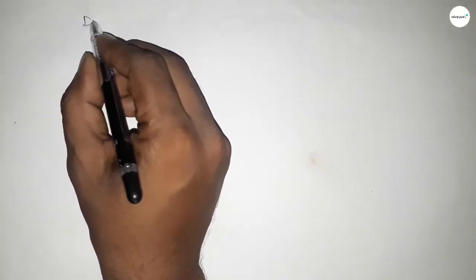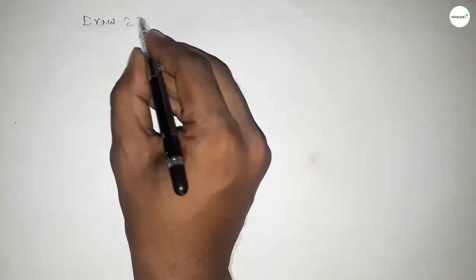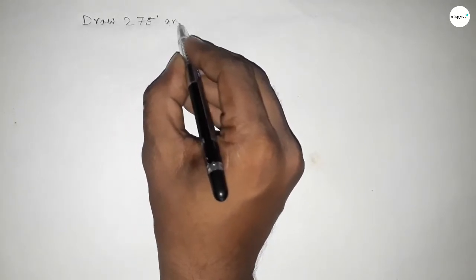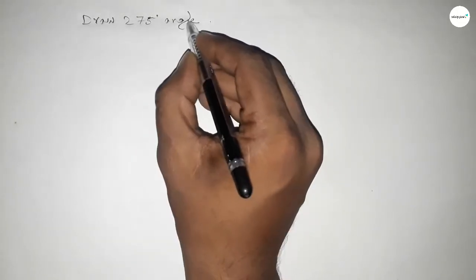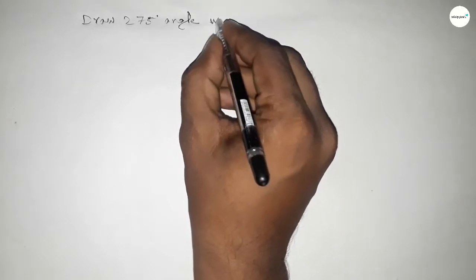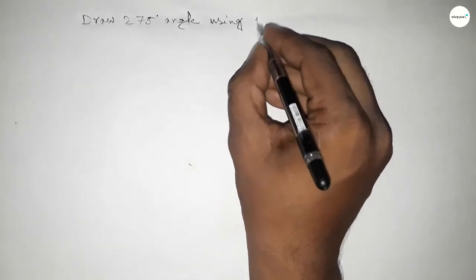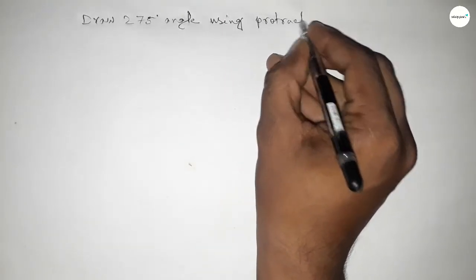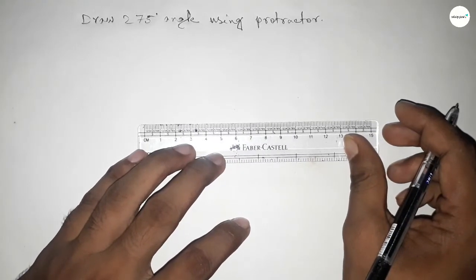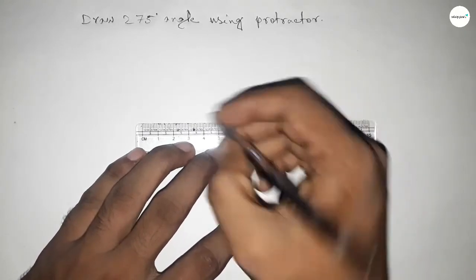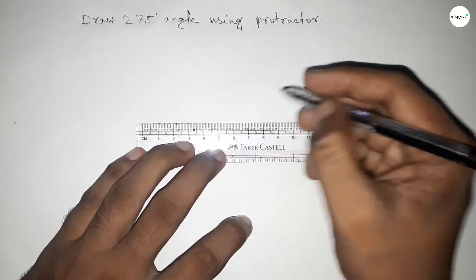Hi everyone, welcome to SSR classes. Today in this video we have to draw a 275 degree angle by using protractor. So let's start the video. First of all, drawing a straight line.